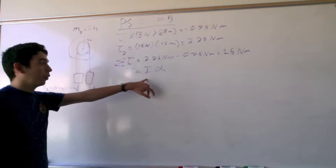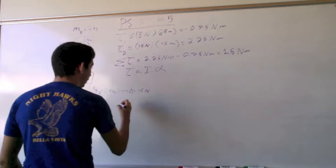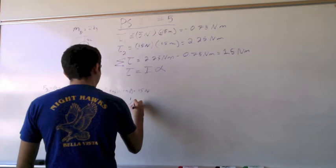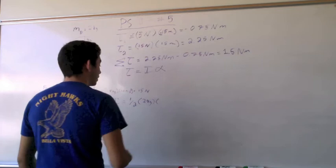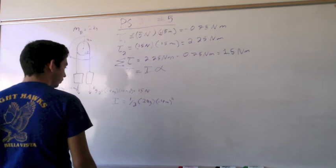However, we have yet to calculate the moment of inertia. Since this is a solid disk, it's pretty straightforward. The moment of inertia, I, is equal to one-half the mass, which is 2 kilograms, times the radius, which is 0.4 meters squared. It's as simple as that.